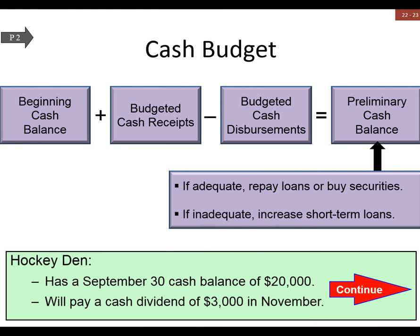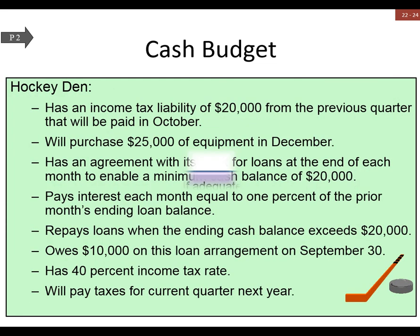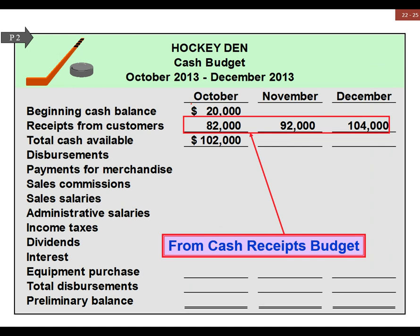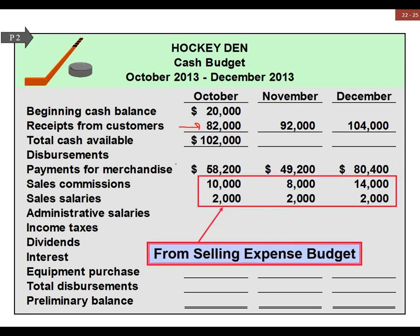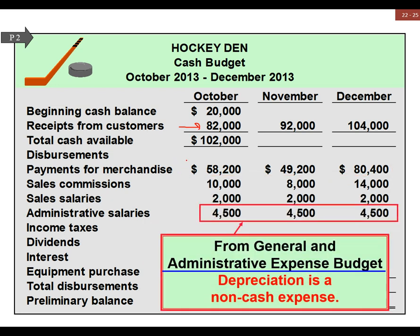So our cash budget: we take our receipts and add them to our beginning balance, then subtract out the disbursements, and that gives us our preliminary cash balance. There are other cash items that come in as well. We have cash receipts from customers, and then a section for disbursements — payments out.